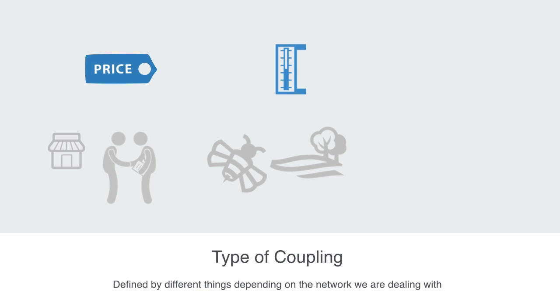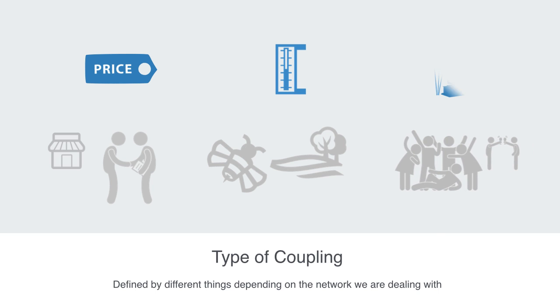We could also think about the formality of a social setting as a parameter. As we reduce the formality of the setting — say by having an office party — people's social inhibitions are reduced and they are more likely to interact.